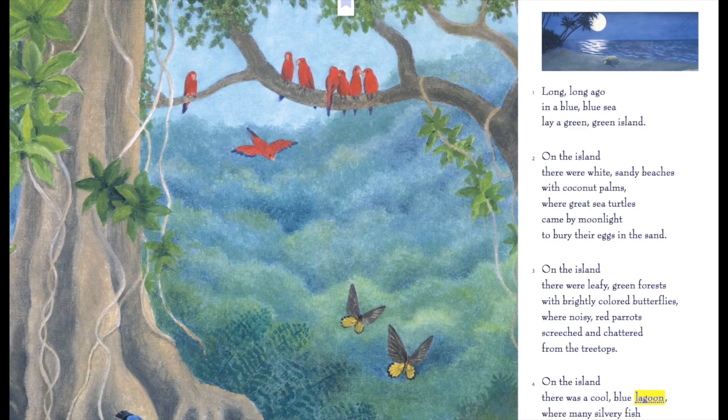How do the details in the illustrations match the text on page 359, and how do they help you understand the setting? Think about that question for a bit. If you look at paragraph 3, it says there were leafy green forests with brightly colored butterflies where noisy red parrots screeched on the treetops — do you see that? Let's try to match other examples of the text to the illustration.